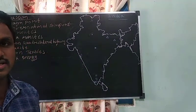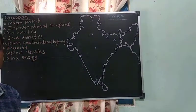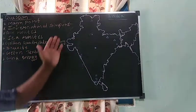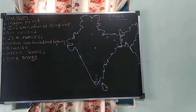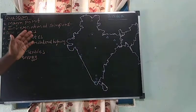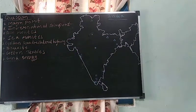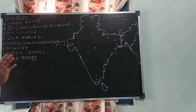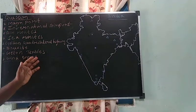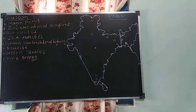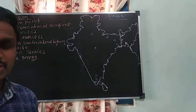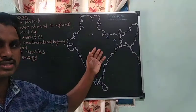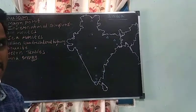Welcome to everyone. In this class, we are going to discuss the geography map. The question covers major ports, international airports, air routes, sea routes, the Golden Quadrilateral Highway, bauxite mineral, cotton textiles, and wind energy. Given different places, you have to mark them on this India map.